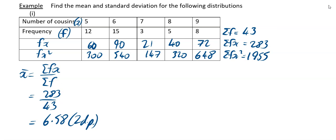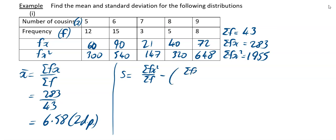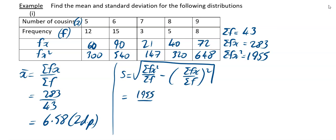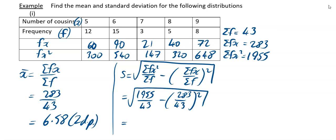Obviously you can't have 6.58 cousins, but it's a mean, so means can have decimals in them. For your standard deviation formula: S is equal to the square root of sigma fx squared divided by sigma f, minus sigma fx over sigma f, and that is squared. Filling that in: 1955 for your sigma fx squared, sigma f was 43, and then minus brackets — sigma fx was 283, sigma f is 43 — that gets squared, and then the whole thing gets square rooted. Using your calculator with your square root button, fraction button, brackets, and squaring function, you should get 1.47 to 2 decimal places.